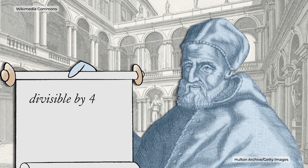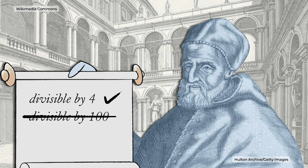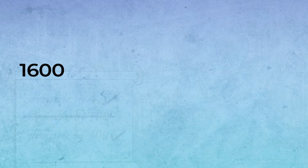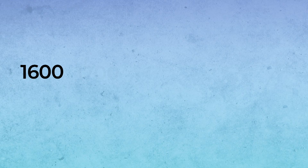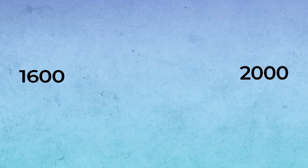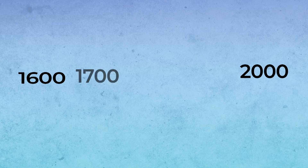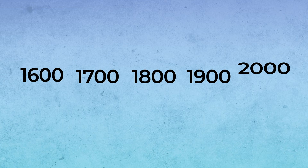A leap year has to be divisible by four, but there are some exceptions — it can't be divisible by 100 unless it's also divisible by 400. That's why the years 1600 and 2000 were leap years, but 1700, 1800, and 1900 weren't.